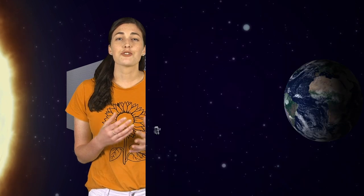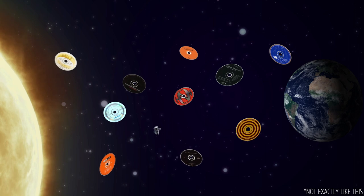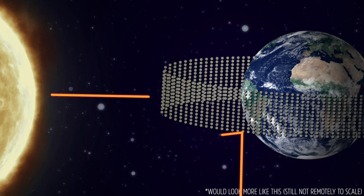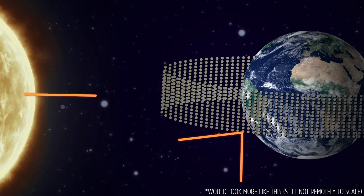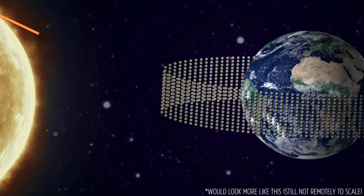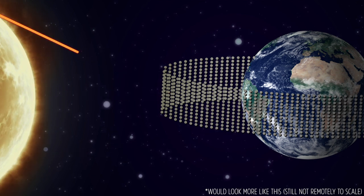Since then, other space mirror proposals have popped up, like launching trillions of super lightweight disks into space that would redirect some of the Sun's rays so they don't hit us. But that would also cost trillions and be really hard to get into space. So no go.